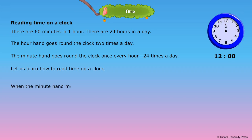When the minute hand moves from one number to the next number, for example, 12 to 1, it covers 5 minutes. 12 o'clock. 12:05.